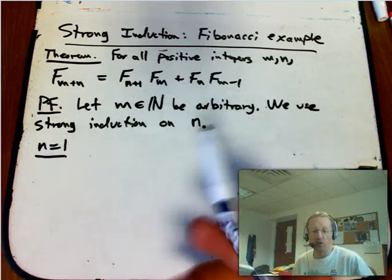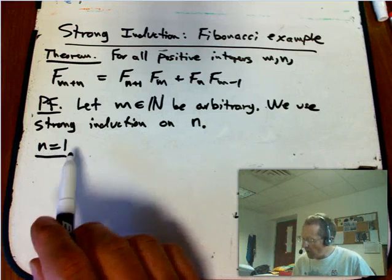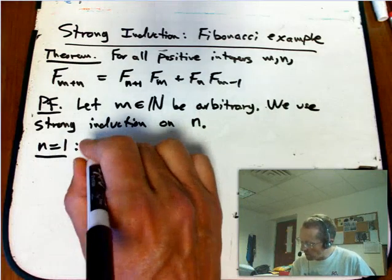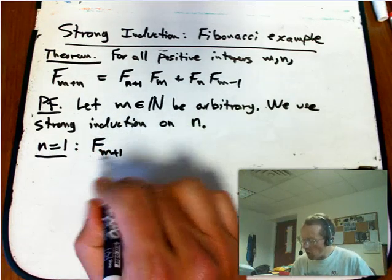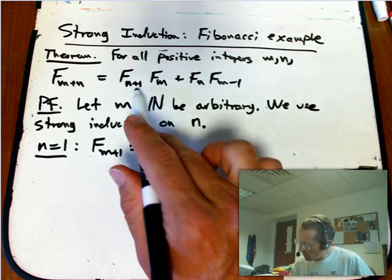So n equals 1, the principle of strong induction says if you can prove n equals 1 assuming nothing, in other words, on its own, then you're good. In other words, you have to just be able to show that n equals 1 is true not inductively at all. It's the start of the chain. So n equals 1, the statement is, and this should be true for all m all at once. Let's see if it is.